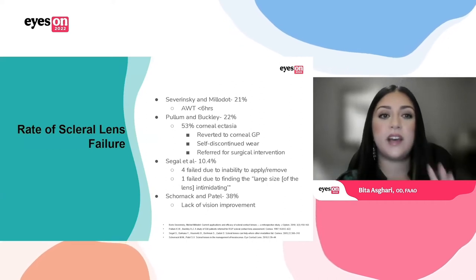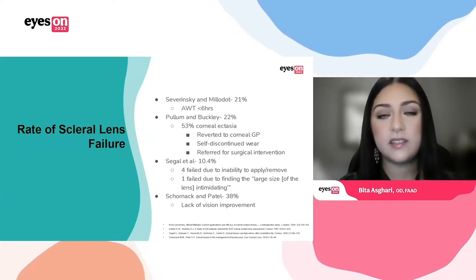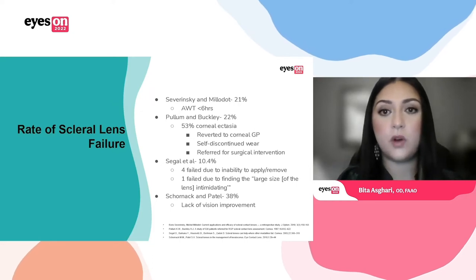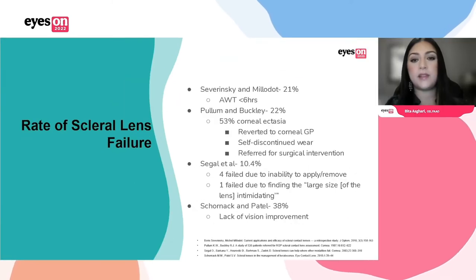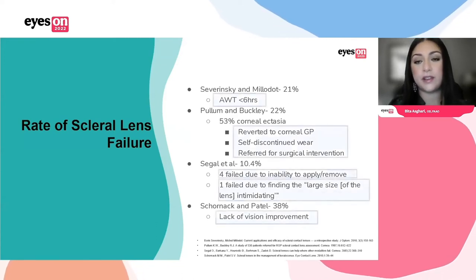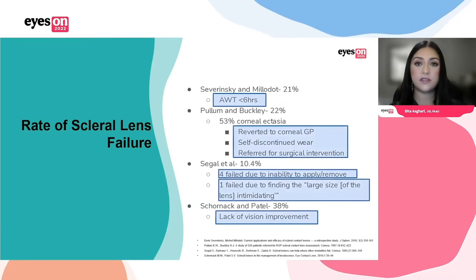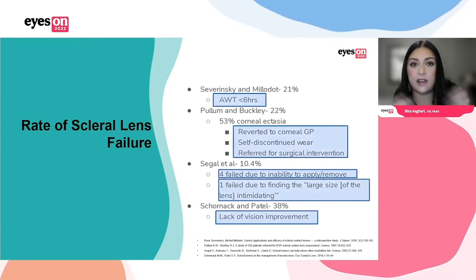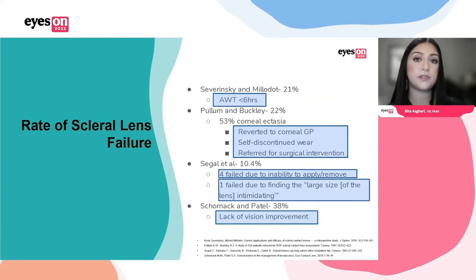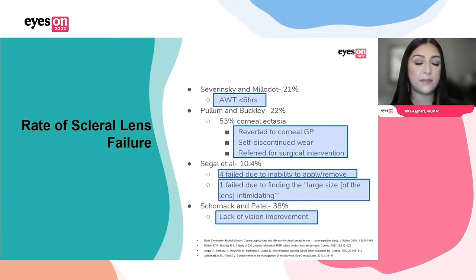Now getting into more details, before we dive into cases, let's look at how the literature has talked about the rate of scleral lens failure. These are four different studies, and the failure rate ranged anywhere from 10.4% to 38% depending on the study.